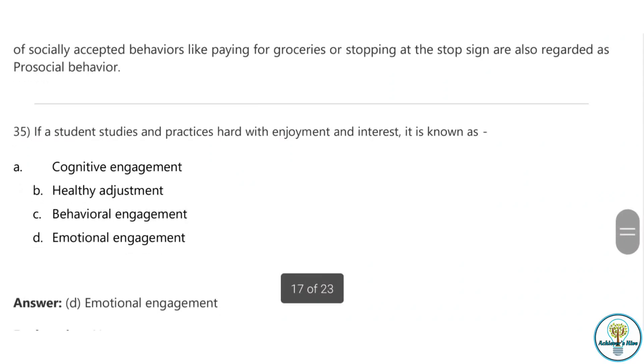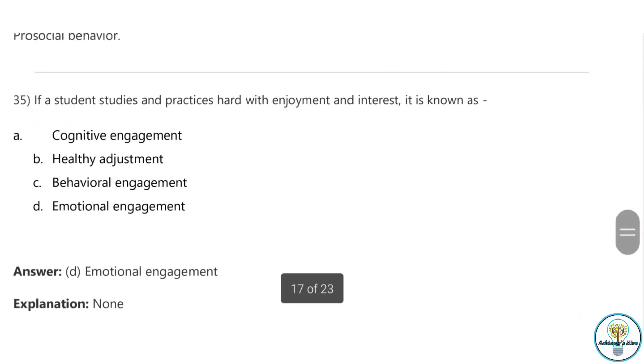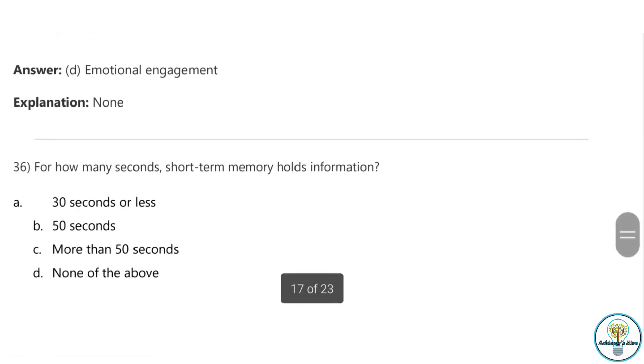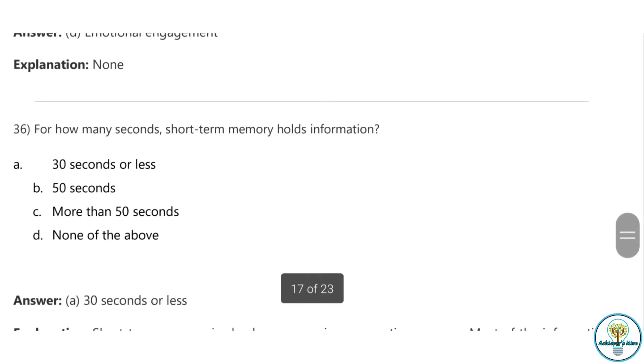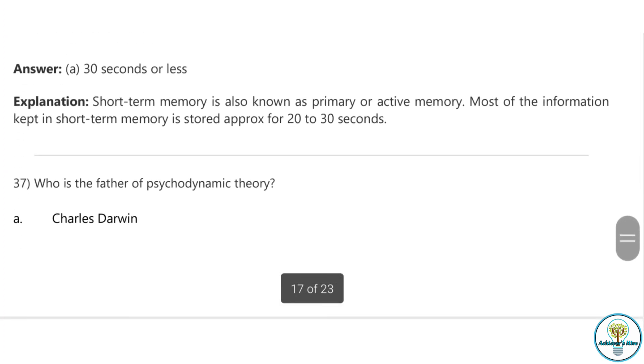Question thirty-five: If a student studies and practices hard with enjoyment and interest, it is known as emotional engagement. Because they are enjoying it, showing their interest, and practicing hard, they are putting all their emotions here. Question thirty-six: For how many seconds does short-term memory hold information? 30 seconds or less. It is also known as primary or active memory and it remains for only 20 to 30 seconds.